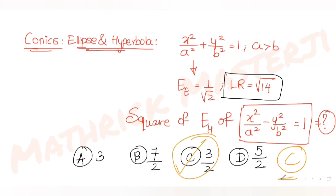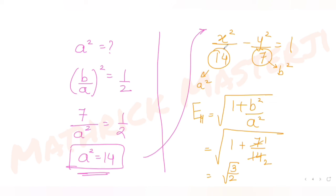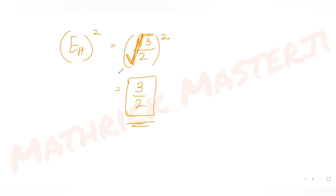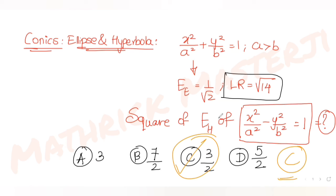To summarize: we used the eccentricity of the ellipse with a > b and the latus rectum condition to find a² = 14 and b² = 7. From there we formed the hyperbola equation and computed the square of its eccentricity, getting 3/2, which matches option C.